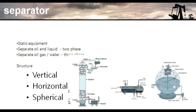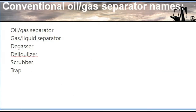There are three types of separator by orientation: vertical, horizontal, and spherical. There are also other types of separator in oil and gas, including the de-gaser.